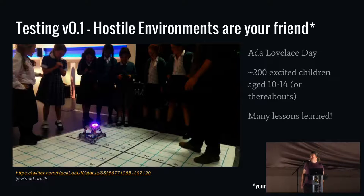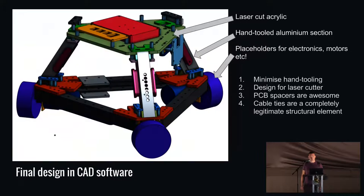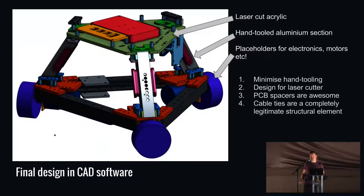This is the final design. It was designed in Onshape, which is an alarmingly web-based CAD program — I thoroughly recommend having a play with it; there are free accounts available. It's somewhat ridiculous that you can do full parametric CAD in a web browser. The physical construction is C-section aluminium for the structural parts, and laser-cut acrylic for almost everything else.